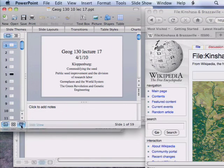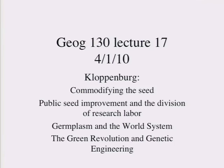Now let's talk about Kloppenberg — a much longer book with a lot more that I encourage you to read. The subtitle is Political Economy of Plant Biotechnology, 1492 to 2000. He wants to look at plant biotechnology in relation to political economy and commodification, in relation to institutions and the division of labor, and in relation to the world economy and germplasm. We'll run quickly through commodifying the seed, public seed improvement and the division of research labor, germplasm and the world system, and the green revolution and genetic engineering.